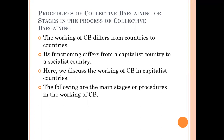Let us discuss the procedures of collective bargaining or the stages in the process of collective bargaining. We know that collective bargaining is not the same in all countries. Different countries adopt different types of collective bargaining processes, so procedures will be different. For example, the procedure of collective bargaining in a capitalist country will be different from that of a socialist country. In capitalist countries, collective bargaining becomes very essential because labor is likely to be exploited at the hands of employers.